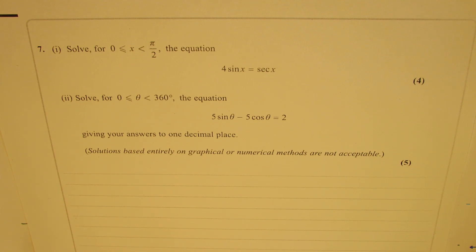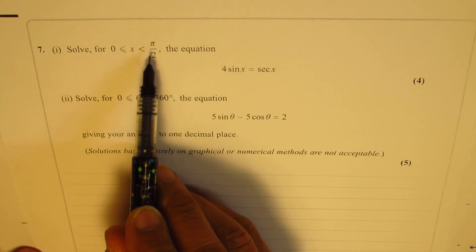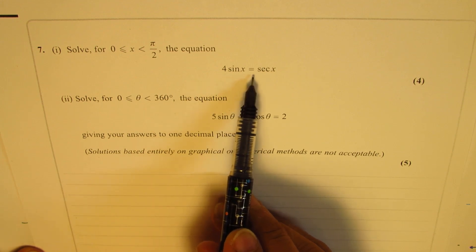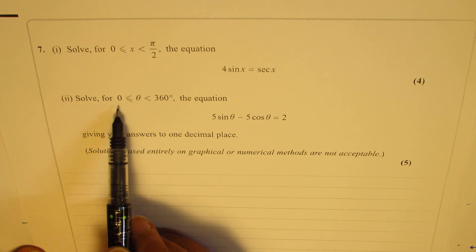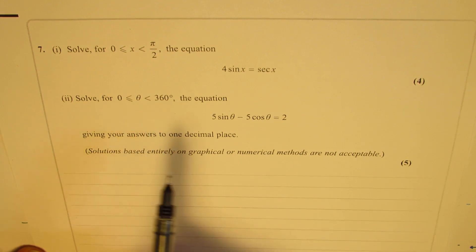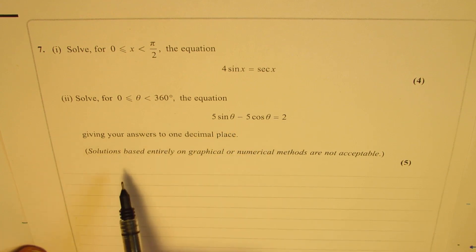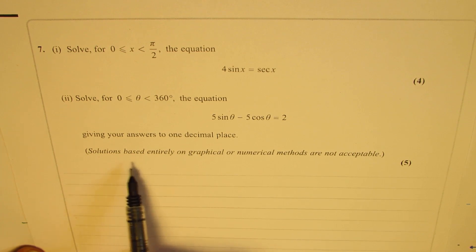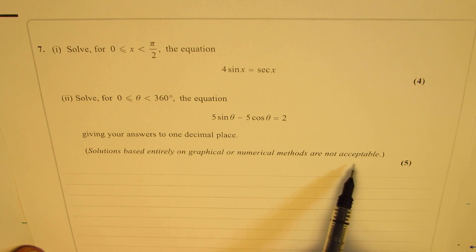We have two questions. 7a is to solve for x where x is greater than or equal to 0 and less than π/2. The equation is 4 sin x equals secant x. Part 2 is to solve for θ between 0 and 360 degrees where the equation is 5 sin θ minus 5 cos θ equals 2, giving answers to one decimal place. Solutions based entirely on graphical or numerical methods are not acceptable.